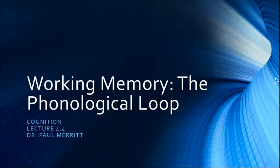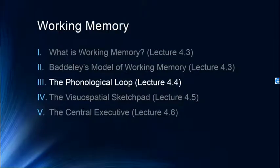Hello, and welcome to our fourth lecture on shorter-term versions of memory in Module 4 in our summer series on Cognition. We talked last time about Baddeley's model of working memory and its various components. Today we're going to talk about specifically the sub-component of working memory called the phonological loop, which is one of the three main systems — the phonological loop, the visual-spatial sketchpad, and the central executive — as well as the episodic buffer, which we won't be spending too much time on.